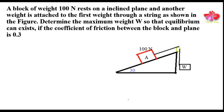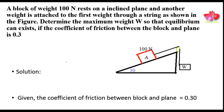We are presented a problem in which there is a 100 Newton block, and this block is attached to another block of weight W through a string. This inclined plane makes an angle of 30 degrees with the horizontal. We are also given that the coefficient of friction between the block and the plane is 0.30. The first thing we need to do for solving this type of problem is draw the free body diagram.